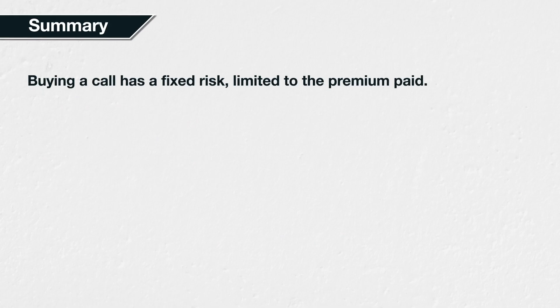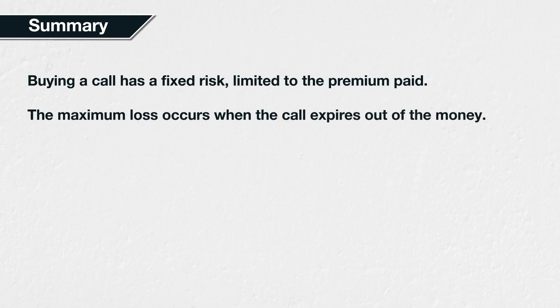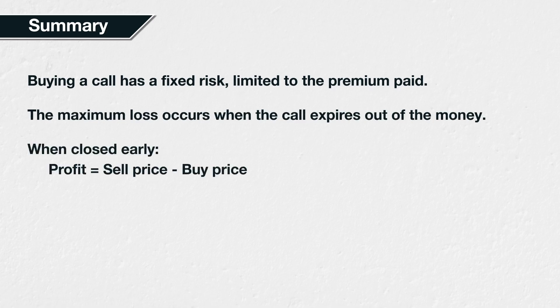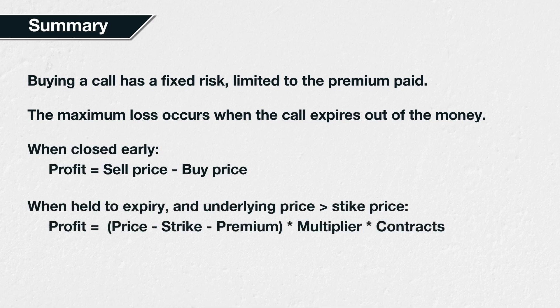In summary, buying a call option has a fixed risk. The maximum loss is limited to the premium paid for the call option. This maximum loss will occur when the option is held to expiration and the underlying price fails to rise above the strike price by that time. When closed early, the profit or loss of a long call option is equal to the price it was sold for, minus the price paid for the option. When the call option is held to expiry and the underlying price is greater than the strike price, we use the formula: (Price at expiration − Strike price − Premium paid per share) × Contract multiplier × Number of contracts. The further above the strike price the underlying price has moved, the more profit a long call option will make.